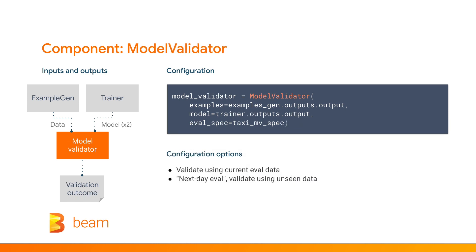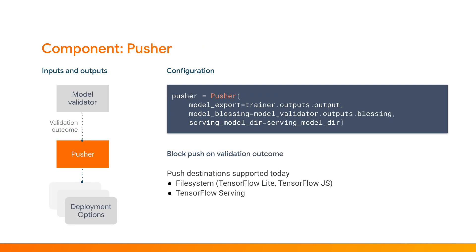So now that we've looked at our model's performance, should we push it to production? Is it better or worse than what we already have in production? We don't want to push a worse model just because it's new. So the Model Validator component uses Beam to do that comparison, using criteria that we define to decide whether or not to push the new model to production. If Model Validator decides that our new model is ready for production, then Pusher does the work of actually pushing it to our deployment targets — TensorFlow Lite for mobile, TensorFlow.js for JavaScript environments, or TensorFlow Serving for server farms, or all of the above.